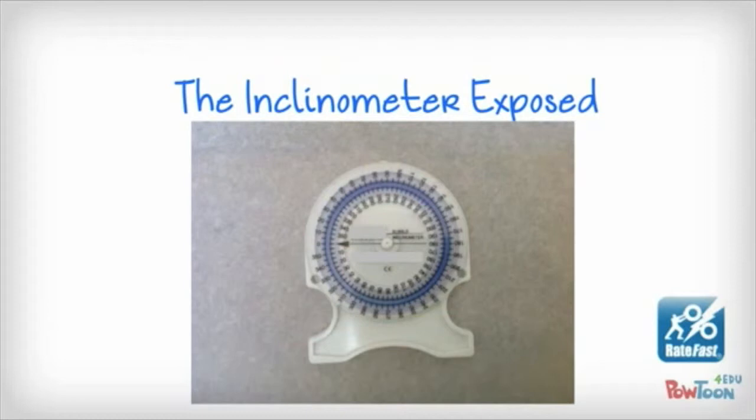On this particular picture here, we have a circular face with a pivot in the center, and that circle dial with all those numbers actually moves around, so when this inclinometer is placed on the spine, the user can set it to zero.